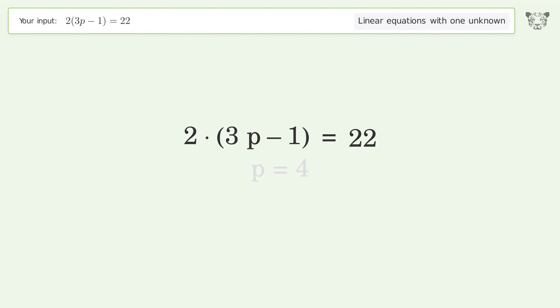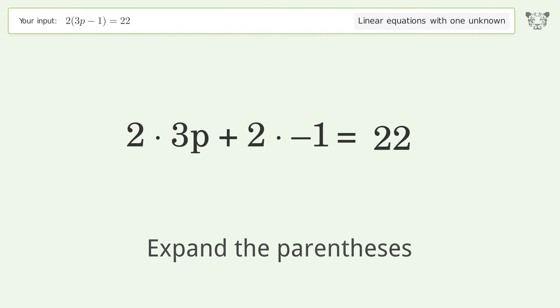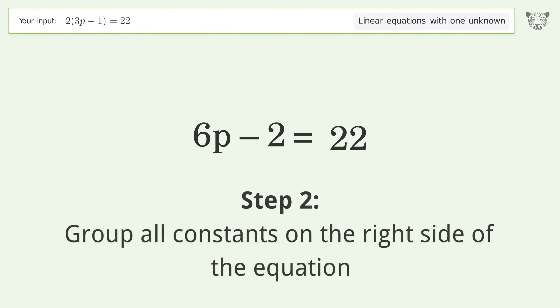You asked Tiger to solve this. It deals with linear equations with one unknown. The final result is p equals 4. Let's solve it step by step. Simplify the expression, expand the parentheses, multiply the coefficients, simplify the arithmetic.